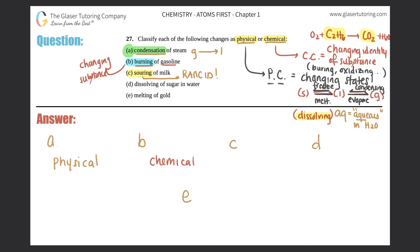D, dissolving of sugar in water. There's the hidden phase change. Dissolving is going to aqueous, going to an aqueous state. So since that's the case, this is a physical change.